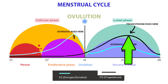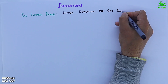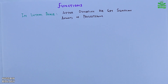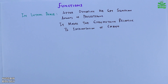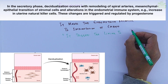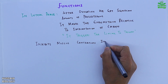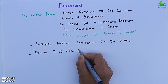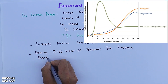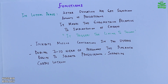In the luteal phase — after ovulation — significant amounts of progesterone are produced. It makes the endometrium receptive to implantation of the embryo through decidualization, triggers the lining to thicken, and inhibits muscle contractions in the uterus. During 7 to 10 weeks of pregnancy, the placenta begins to secrete progesterone, supporting the corpus luteum.